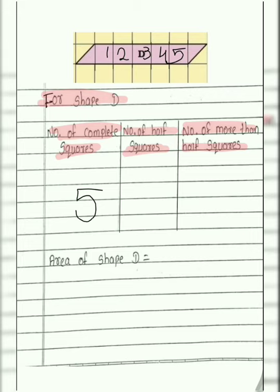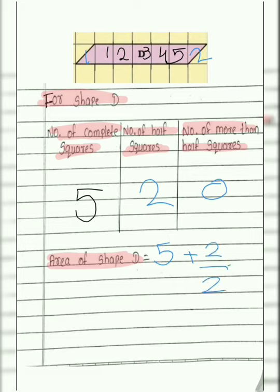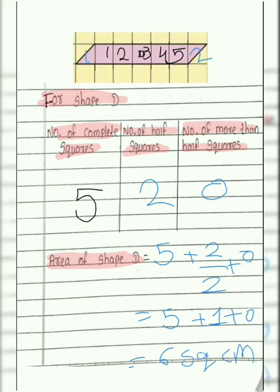Number of half squares — can you observe it? 1 and 2, so we write 2. Number of more than half squares? 0. Area of shape D equals 5 plus 2 divided by 2, plus 0. That is 5 plus 1 plus 0, equals 6 square centimeters. Area of shape D is 6 square centimeters.